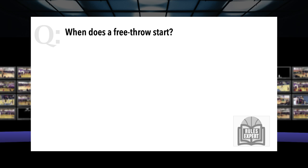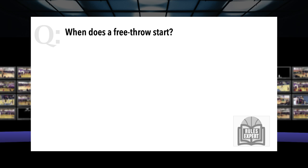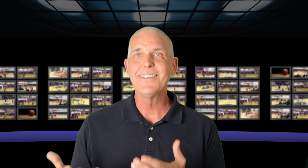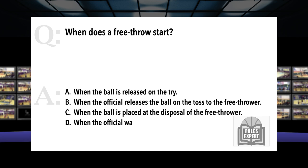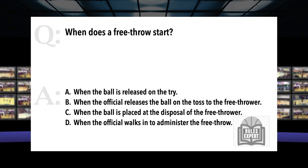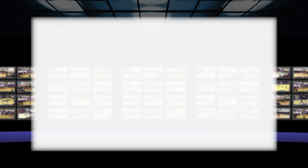Question. When does a free throw start? After the session we just had with the previous question, this should be pretty obvious. When does a free throw start? A. When the ball is released on a try. B. When the official releases the ball on the toss to the free thrower. C. When the ball is placed at the disposal of the free thrower. Or D. When the official walks in to administer the free throw. Clearly, the answer is C — when the ball is placed at the disposal of the free thrower, as we learned in the previous question.